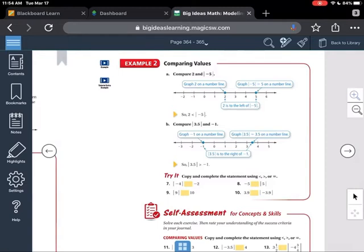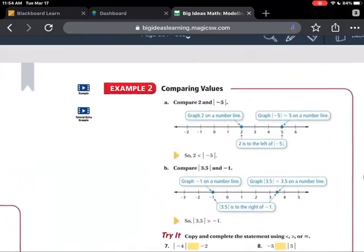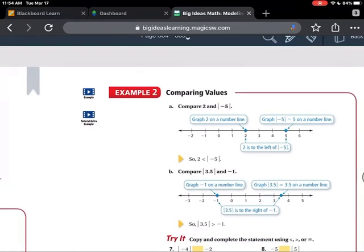I just want you to think about what is, so when it says compare two and the absolute value of five, it is basically telling you, so let's see if I can zoom in without messing it up. It compared to and the absolute value of negative five. So what it's saying is compare the number two and the distance between zero and negative five. That's what it's saying.